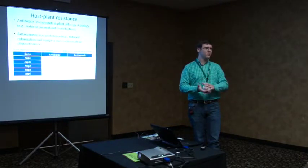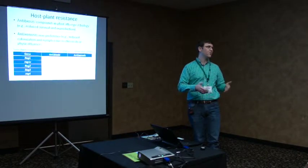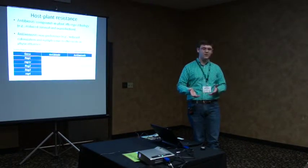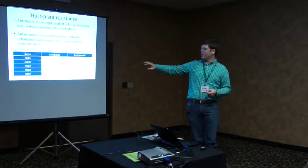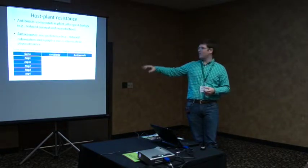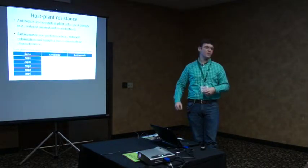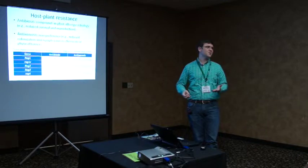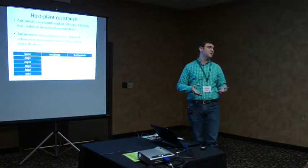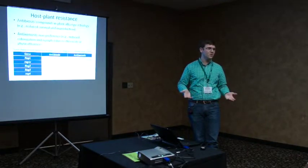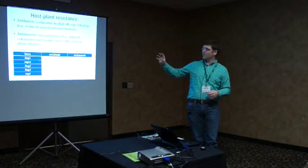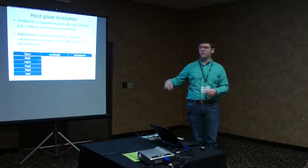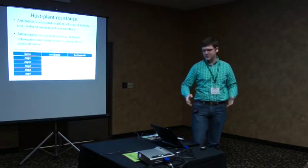There are a few different genes found so far that provide either antibiosis or anti-xenosis. They're called RAG genes, or resistance to Aphis glycines. They've been found by looking at plants in Asia where the soybean aphid is native and screening those for resistance, then breeding that trait into current varieties. I'll be referring mainly to RAG1 and RAG2, but there are many different RAG genes. If you're looking for soybeans resistant to soybean aphid, look for varieties that say RAG1 or RAG2.